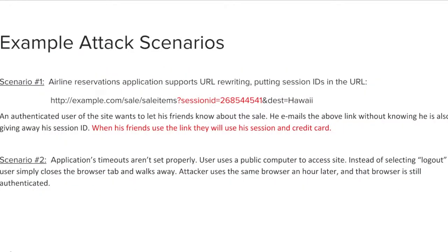Let's review a couple of attack scenario examples. In the first scenario, the session ID is put into the URL. When the user shares this link with their friends, for example over social media, those friends will have access to the user's session and all related information, including any credit card info that this site may contain.